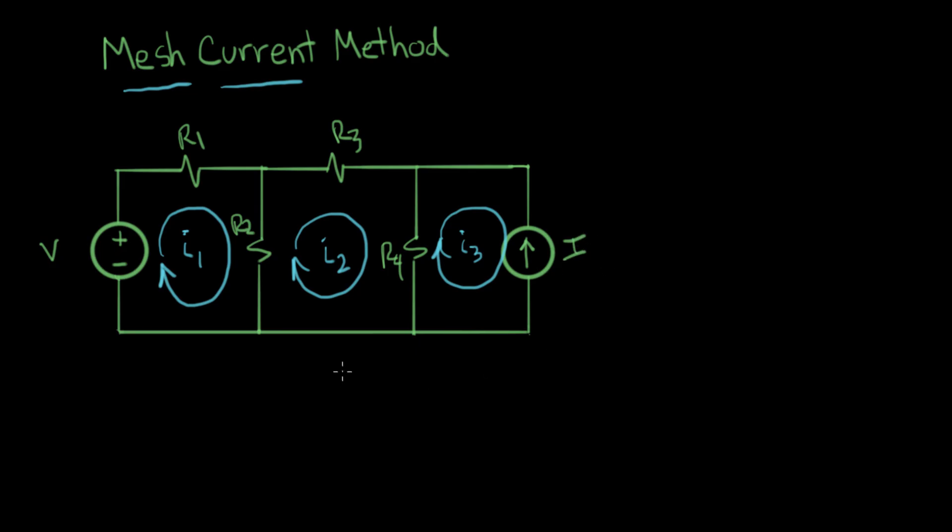That makes it a little bit more interesting, and this is one of the reasons we use the mesh current method. The word mesh actually comes from screen doors or window screens, where there's wires and spaces between the wires. A space in a wire network is called a mesh.